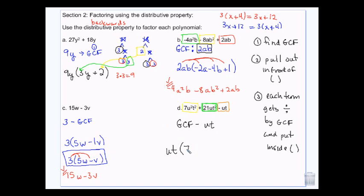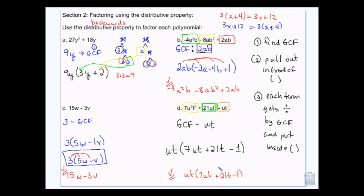Penelope still has 7, because we didn't take any numbers. She had 2 U's and 2 T's, so she's got 1 of each left. Rudolfo keeps his 21. He had 1 U — we took it, so it's gone. But he had 2 T's, so he still has a T left. Poor Alfred — we took away his U and his T, so he's down to just being a 1, because UT divided by UT is 1. When that happens, you replace it with 1.